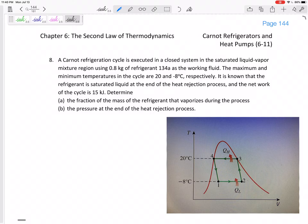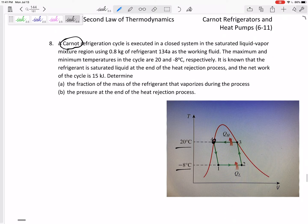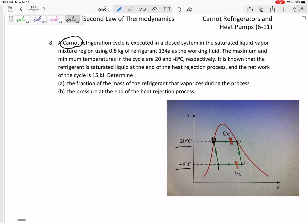This is a Carnot refrigeration cycle executed in a closed system in saturated liquid-vapor mixture using 0.8 kilograms refrigerant 134A as working fluid. Maximum and minimum temperatures are 20°C and -8°C. It's known that refrigerant is saturated liquid at the end of the heat rejection process, and the net work of the cycle is 15 kilojoules. We need to determine the fraction of mass of refrigerant that vaporizes during the process and the pressure at the end of the heat rejection process.